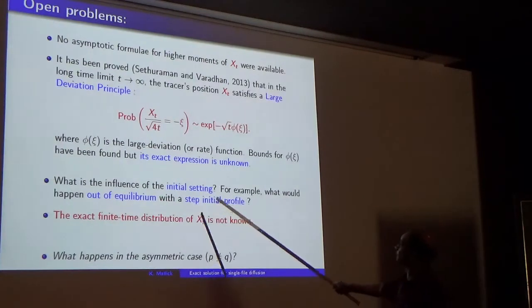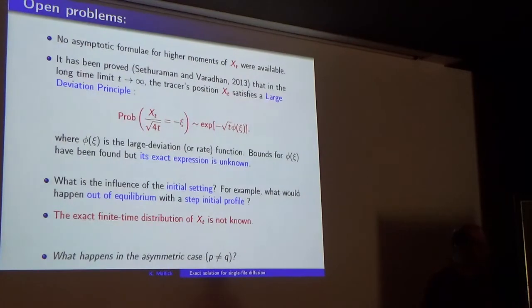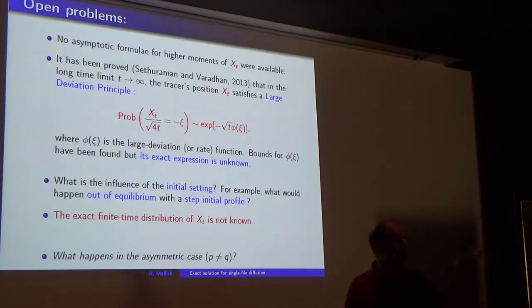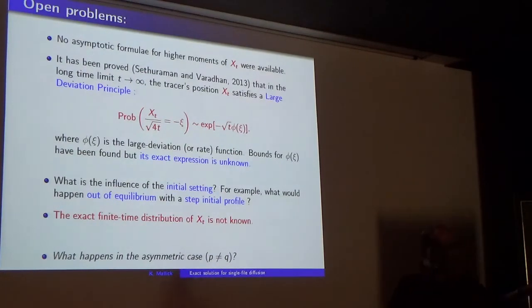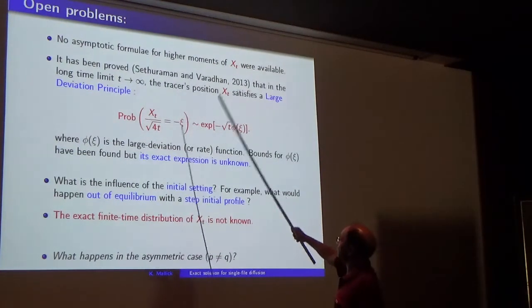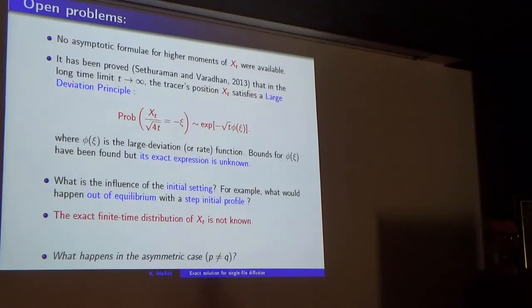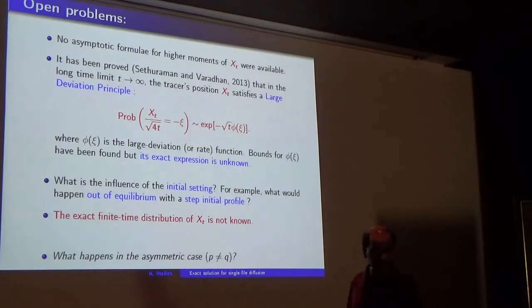When you approach equilibrium, these large deviation functions become identical to the free energy, the entropy, the Gibbs energy, and so on. Sethuraman and Varadhan were able to prove the existence of this function and get some bounds for it, but they didn't compute it — that was not their goal. Another open question is the influence of the initial setting. I was telling of the simple example with uniform density at t=0, but you could start with two different densities — an asymptotic density rho-plus when x is large, and rho-minus when x is small, a step profile. How does it influence the motion of the tracer?